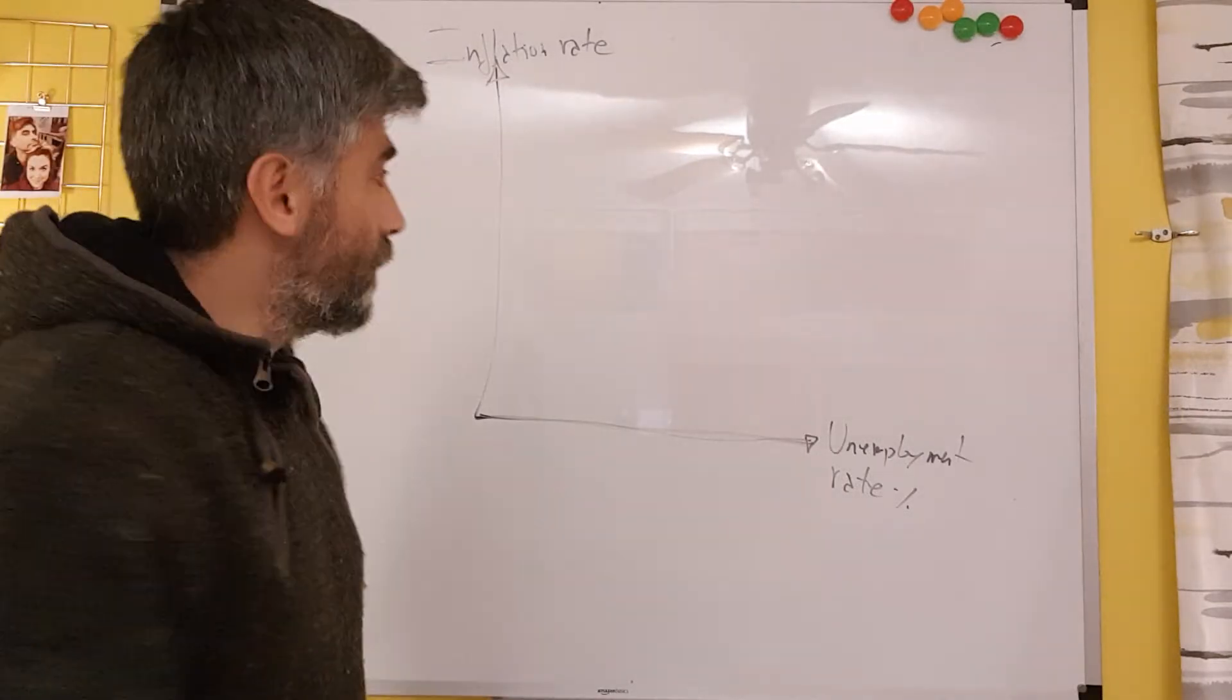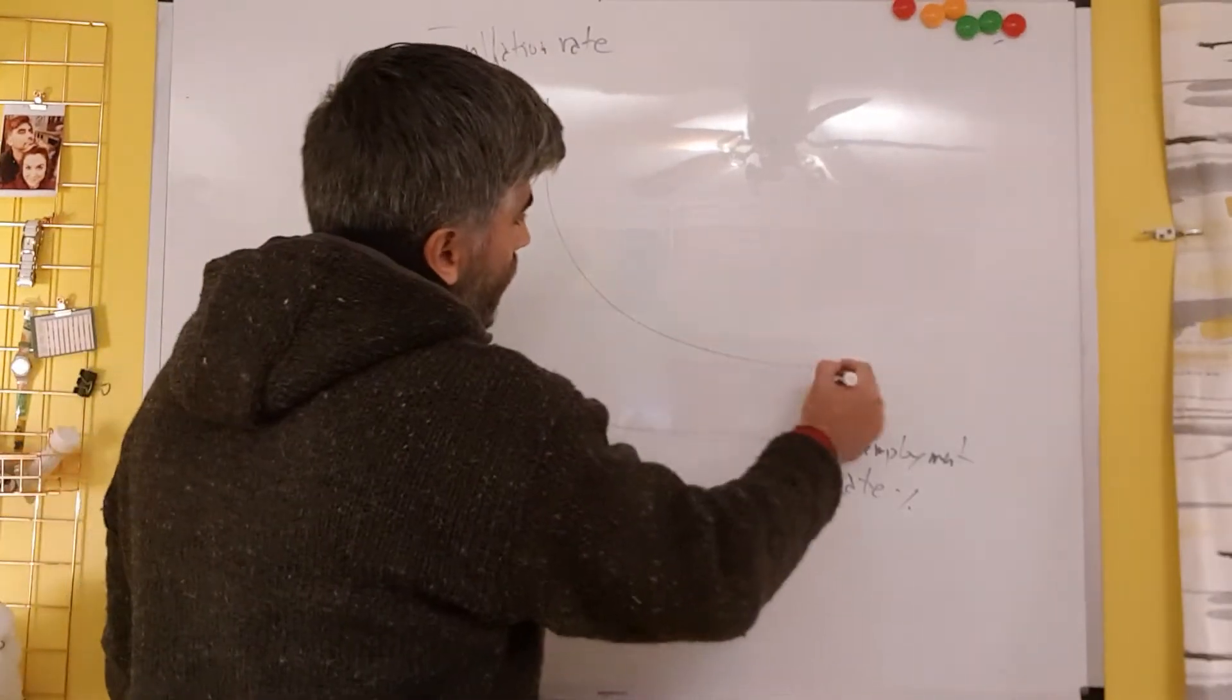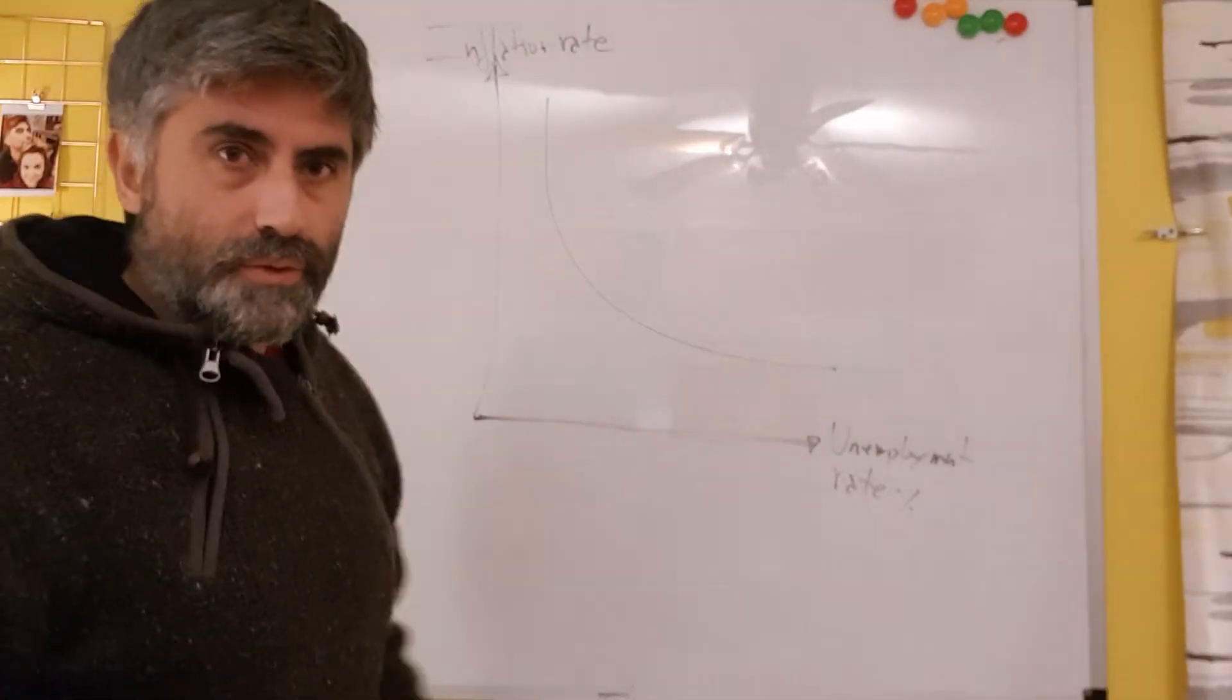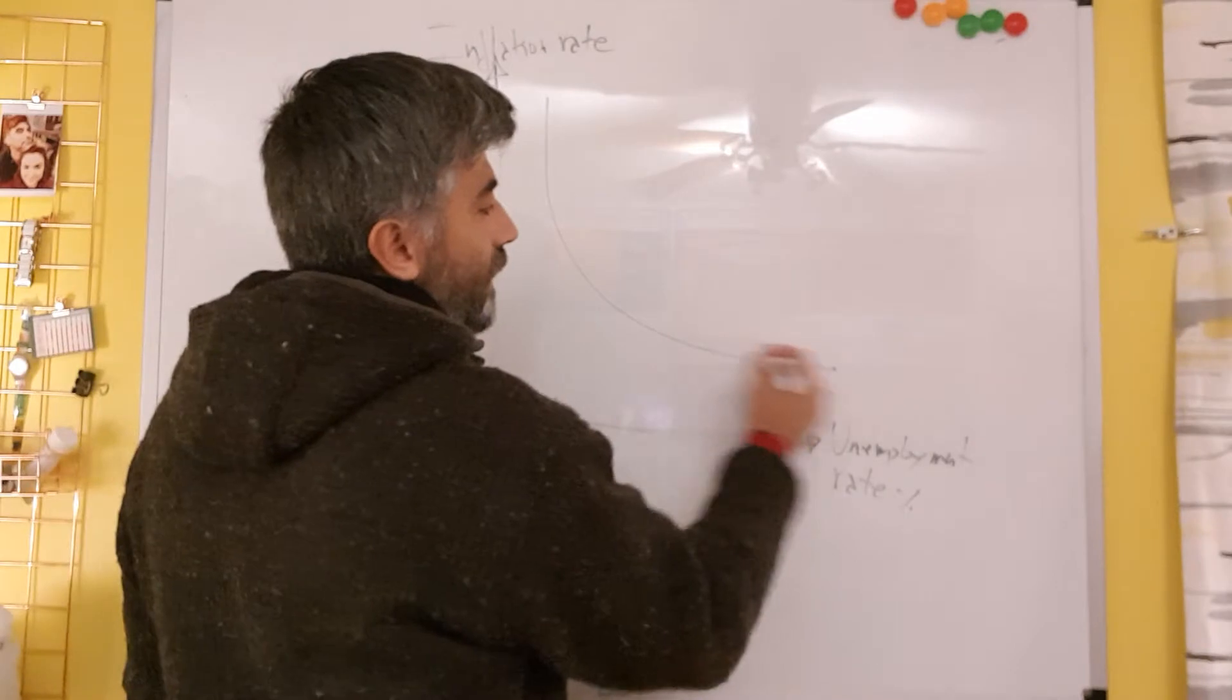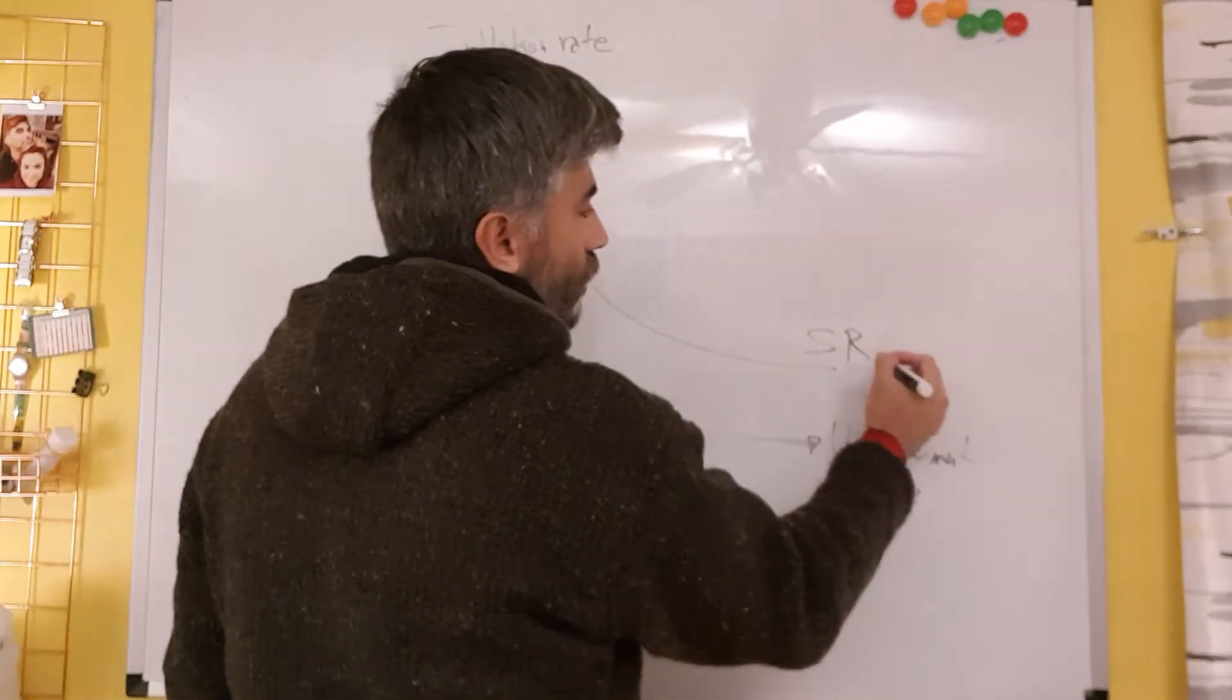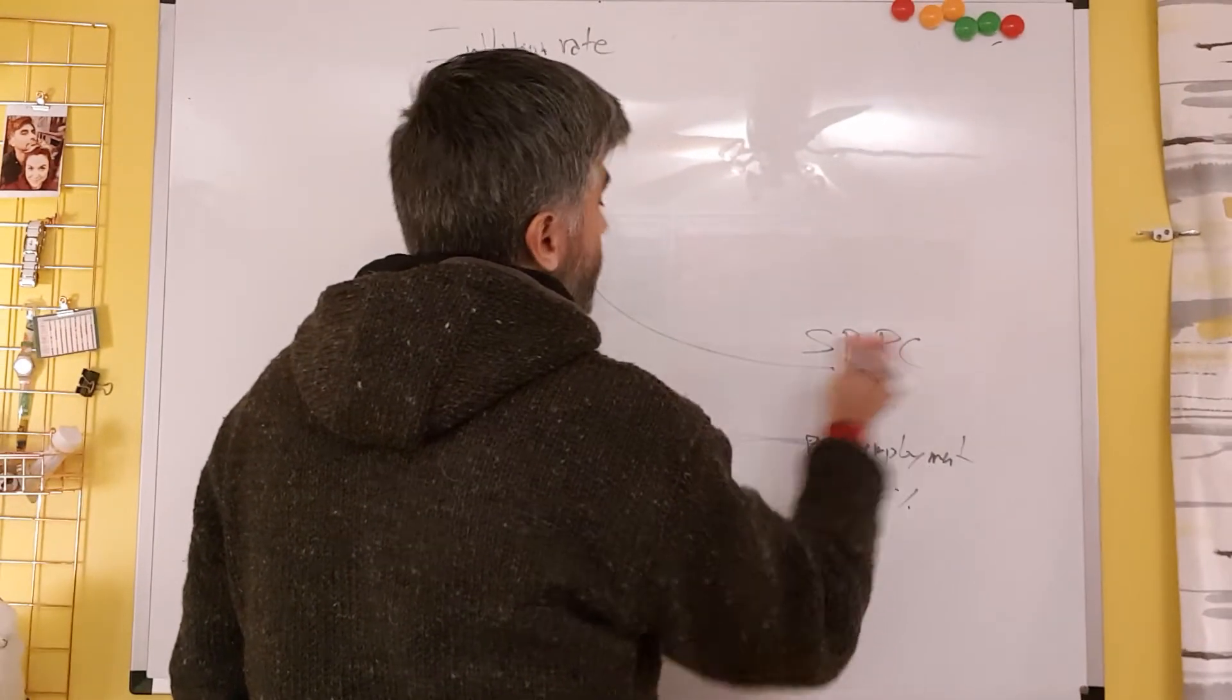There's a negative correlation, and that's what the curve looks like. It's a downward sloping curve, negatively correlated. And that is the short run, SRPC - short run Phillips curve.